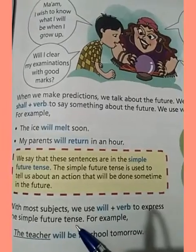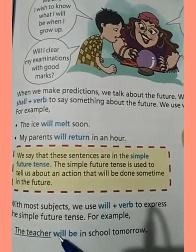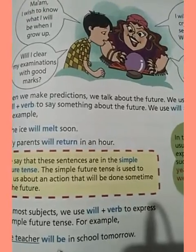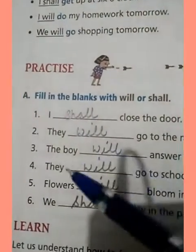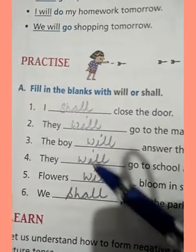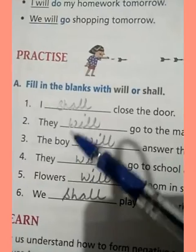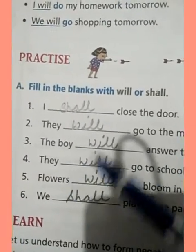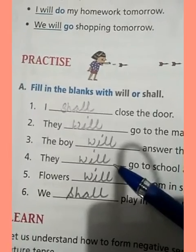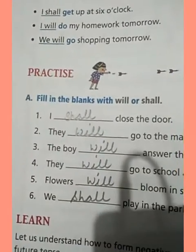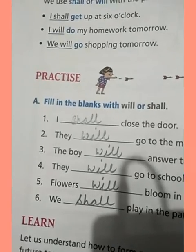For example: 'The teacher will be in school tomorrow' — here 'will' is used with the verb. Now see the exercise: with 'I' and 'we' we use 'shall,' and with the rest — 'he,' 'she,' 'they' — we use 'will,' followed by the first form of the verb. So I hope you all understood. Thank you.